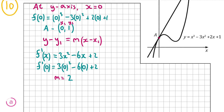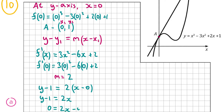Now I have x₁ = 0, y₁ = 1, and m = 2, so I substitute into the formula: y - 1 = 2(x - 0), which gives y - 1 = 2x. Moving everything to one side: 0 = 2x - y + 1. That's the equation of the tangent to f(x), and that's our answer for part A.